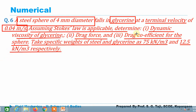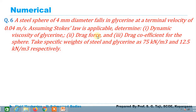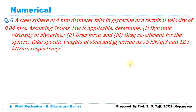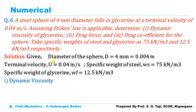The given data is: sphere diameter 4 mm, terminal velocity 0.04 m/s. Since terminal velocity is given and Stokes law is assumed applicable, we use the equilibrium condition W = FD + FB. Specific weight of steel: 75 × 10³ N/m³; specific weight of glycerin: 12.5 × 10³ N/m³.